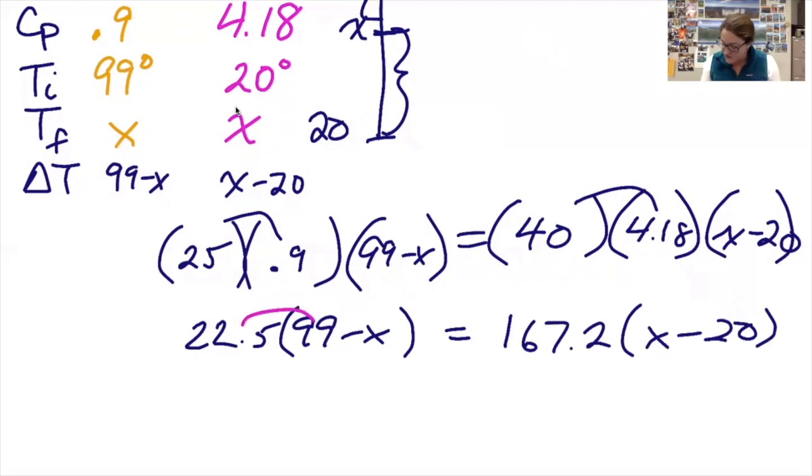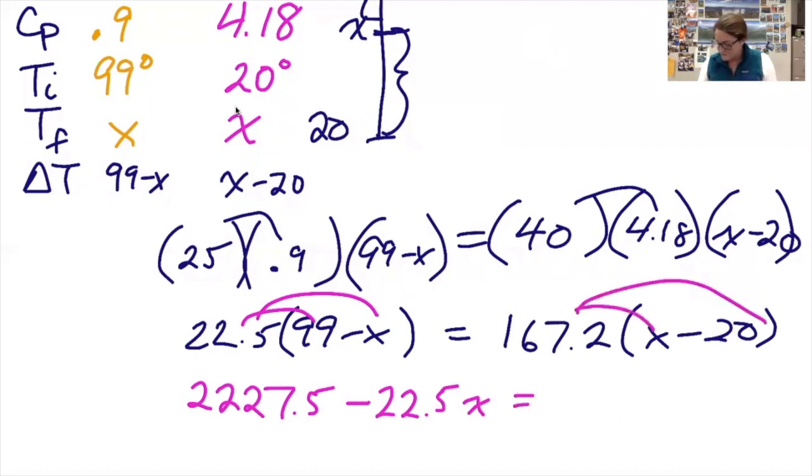Now I'm going to distribute each side. So 22.5 times 99, 2227.5 minus 22.5x. And then on the right hand side, 167.2 times x minus 167.2 times 20, 3344.